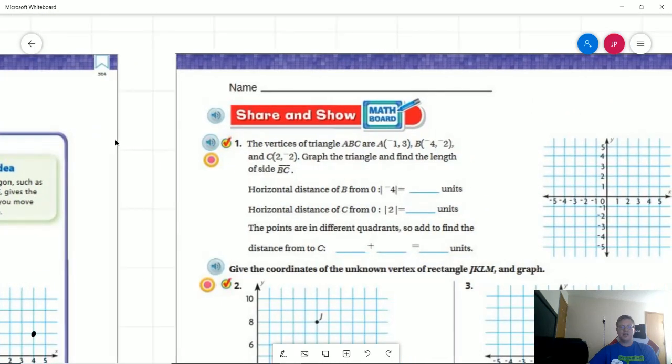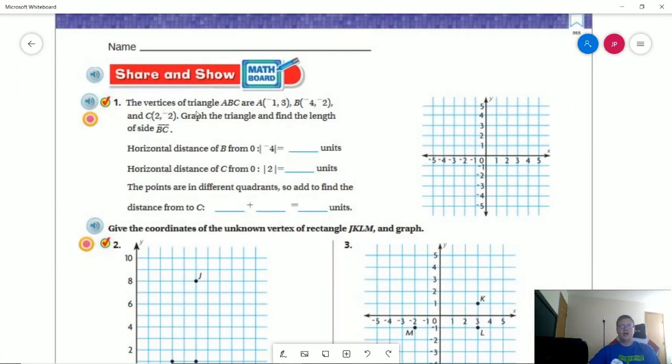So let's go ahead and take a look at our share and show. So we want to go ahead and graph all of the points that we can. It looks like this is going to be a triangle. On the other one, we were doing a parallelogram. We always want to graph whatever we have first if we're having to find something that's missing just to make it a little bit easier to relate.